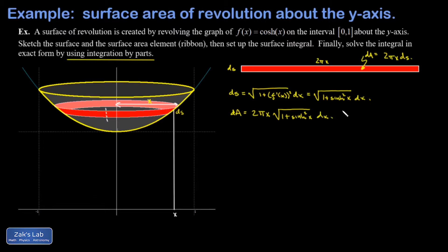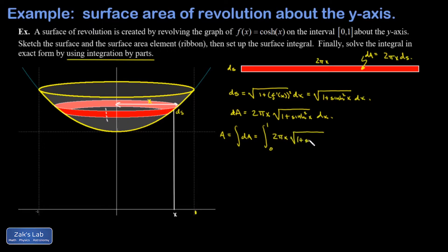Because this is phrased entirely in terms of one variable, we can slap an integral sign on it and add up all the contributions. The total area A is the integral as x goes from 0 to 1 of 2π x times the square root of 1 plus sinh²(x), dx.